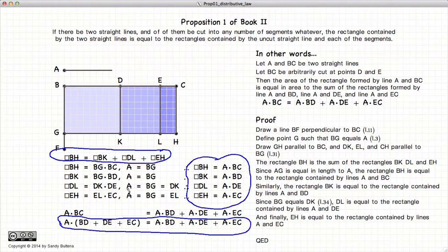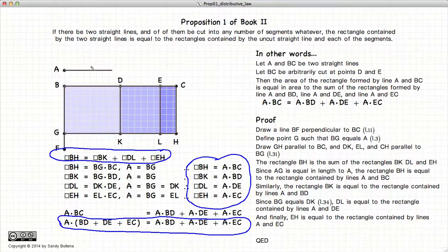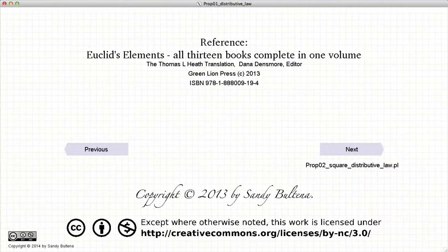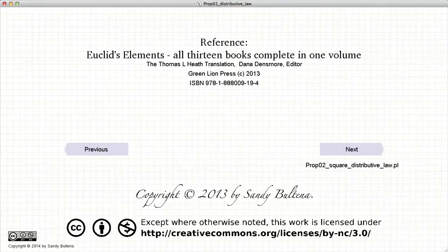So to recap, A times BC is equal to A times each individual segment added together. And that concludes this video presentation. To see the next presentation, just click the next button.